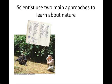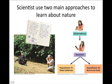The second approach is called hypothesis-based science. By using the observations of discovery science as a stimulus to seek natural causes and explanations for those observations, this usually involves the proposing and testing of hypotheses. A hypothesis is a proposed explanation for a set of observations.